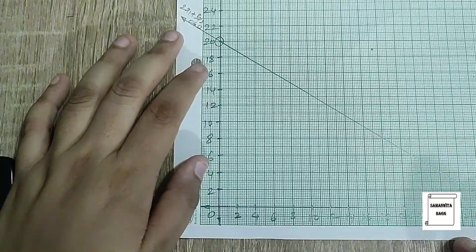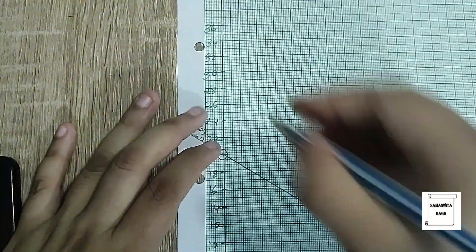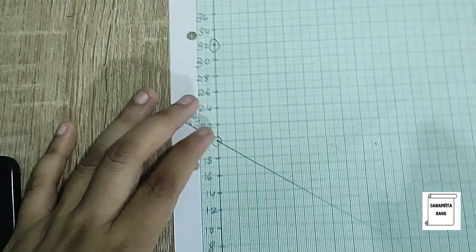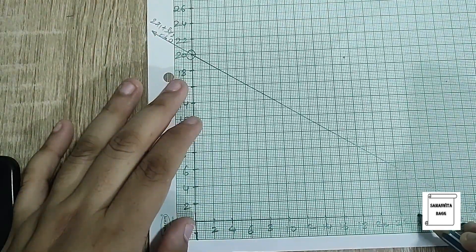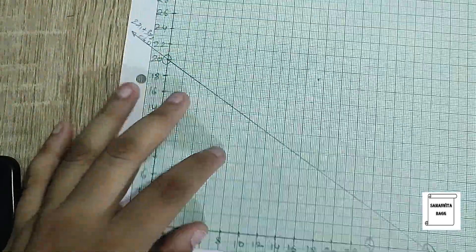Next points are (0, 32) and (24, 0). I will join these two points now.